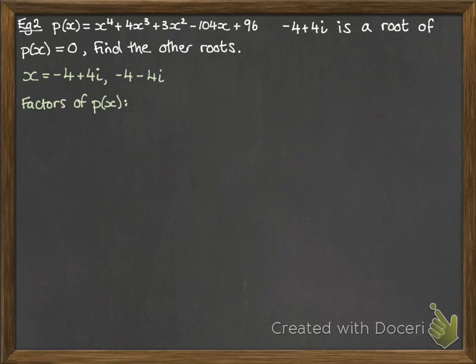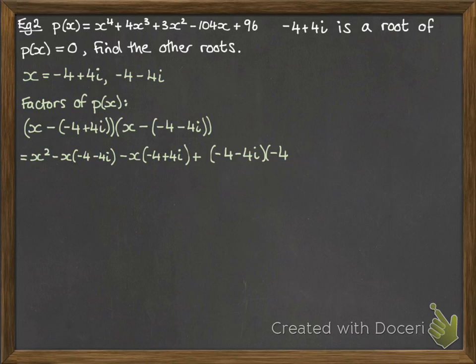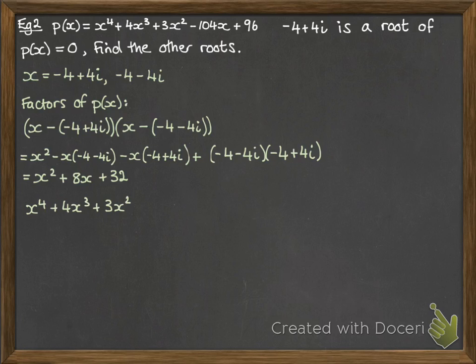Now we are looking for factors of p of x. That would be x minus each of the two roots that we know. We know that they are factors. If you multiply that out, it looks like this, and we get x squared plus 8x plus 32. So we need to find the other part that multiplies with it to make our polynomial.